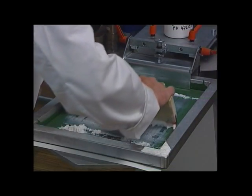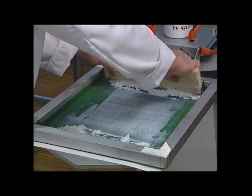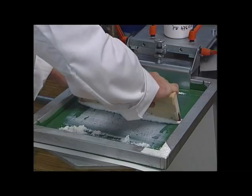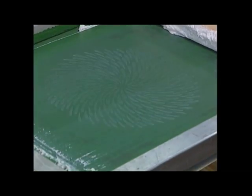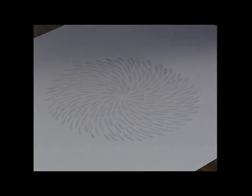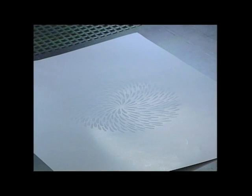For the flocking of motifs, the adhesive is applied through a screen printing frame, whereby it's evenly doctored through the screen. A sufficiently thick adhesive coat must be applied. Then, by flocking, the design is made very visible.